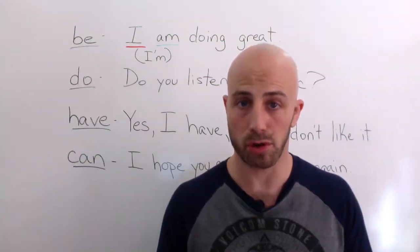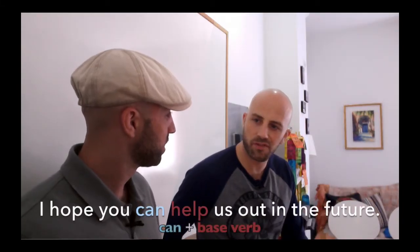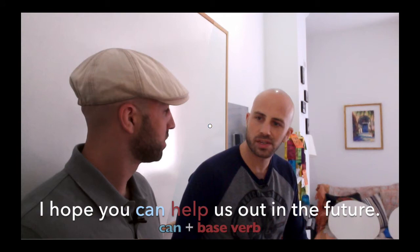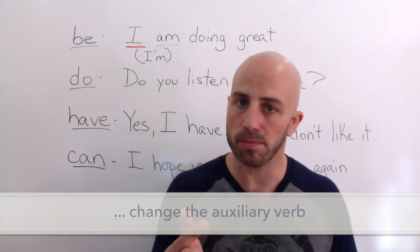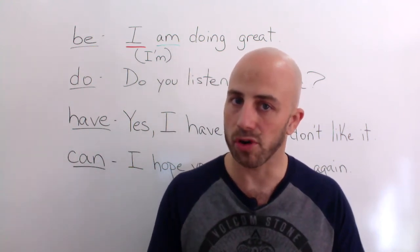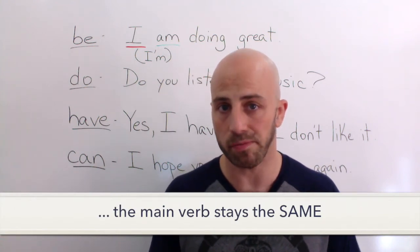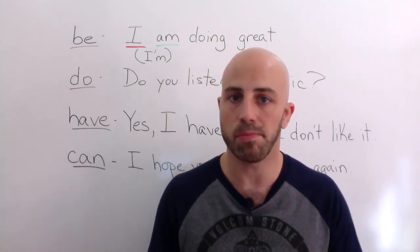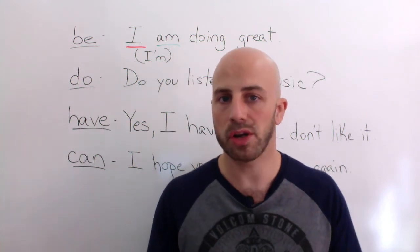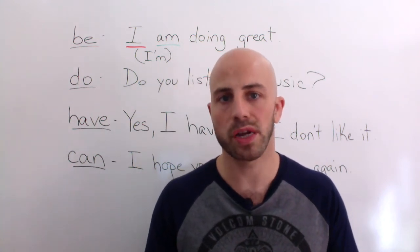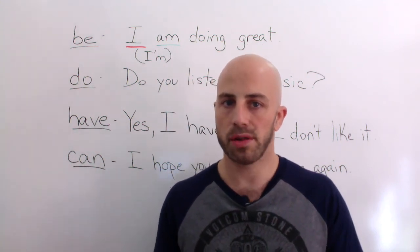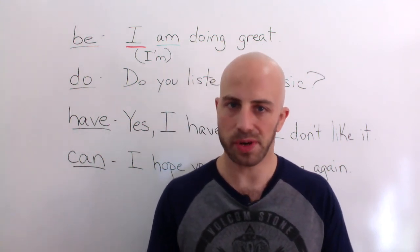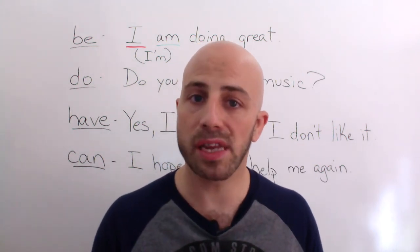We use 'can' plus the base form of the main verb: 'I hope you can help us out in the future.' Note: if you want to change the tense or the person of your sentence, you change the auxiliary verb — you don't change the main verb. The main verb always stays the same. So if you're using 'be': 'I am doing great,' 'I was doing great,' 'you are doing great' — the main verb stays 'doing.'